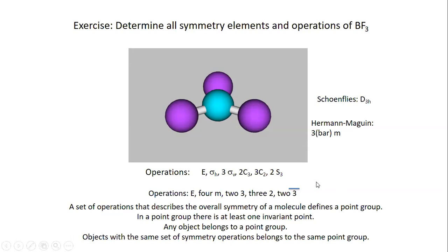In the Hermann-Mauguin formalism, the three C2 operations are written as 3·2, and the two S3 operations are written as 2·3-bar. Once we have found all symmetry operations associated with a particular object such as a molecule, we know everything needed about its symmetry.